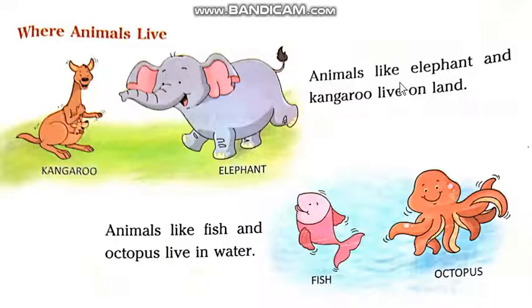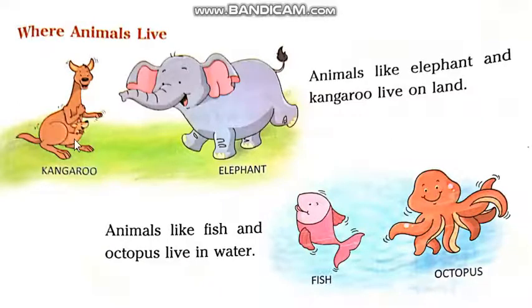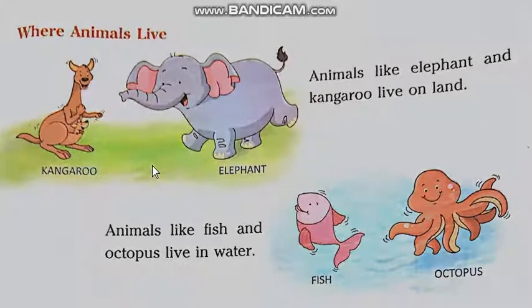Animals like elephant and kangaroo live on land. Animals like elephant and kangaroo zameen par rehte hain.